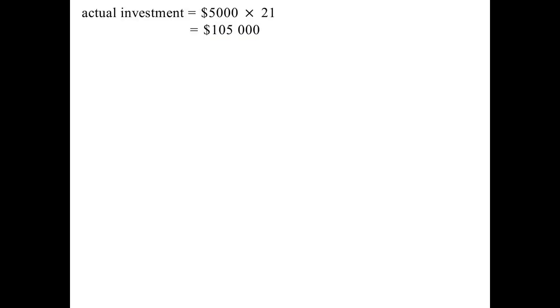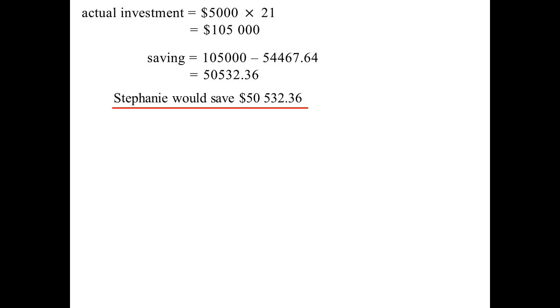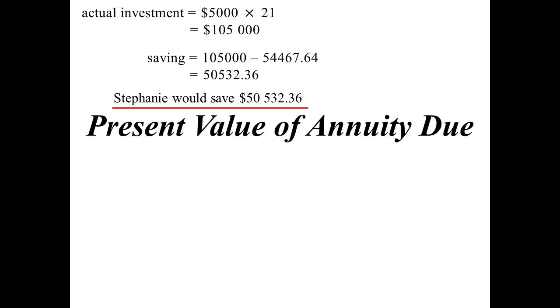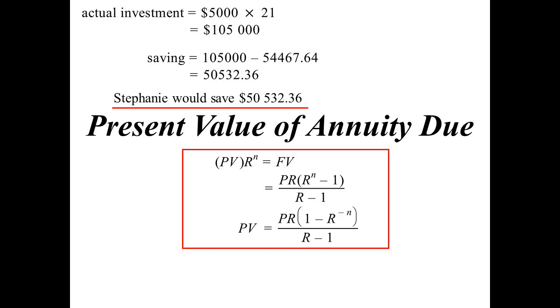Now, the actual investment, by doing it each year, remember we put in $5,000 for 21 years? So I actually ended up putting in $105,000. So how much would I save if I did it that way? Well, $50,000. Well, $50,500. It's quite a bit, if I could afford to do it. So that's the present value of an annuity due to create a formula for that then. So what we said was present value times R of the power of N would equal the future value. So if I divided by R of the power of N, I'd have a formula that I could use for present value.